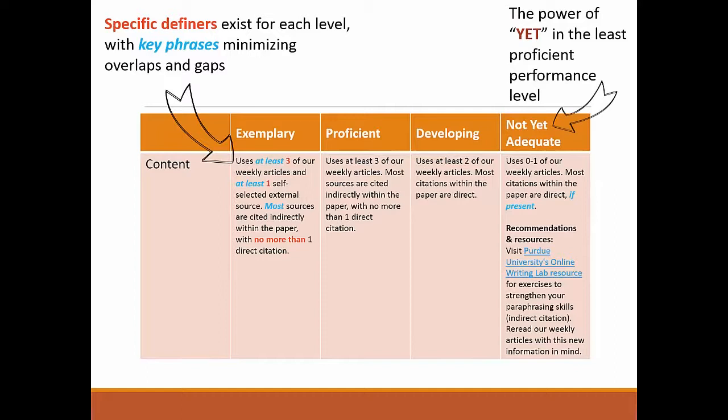Two of a rubric's biggest enemies are overlaps and gaps. When we use specific definers that need to be present at each particular level, we minimize overlaps. When we use key phrases such as "at least," "may," "most," "if present," and "or," etc., we minimize those gaps.